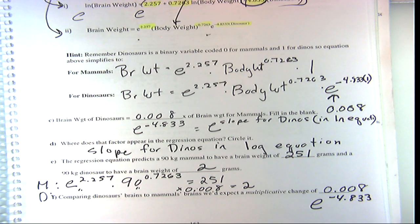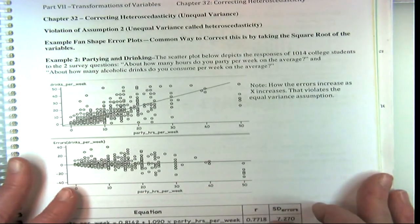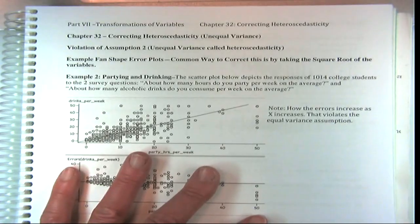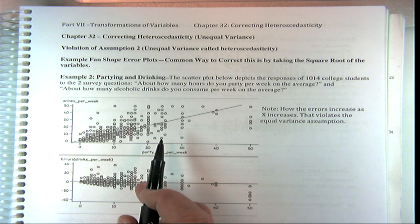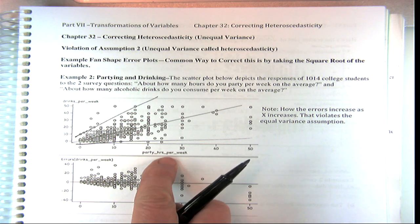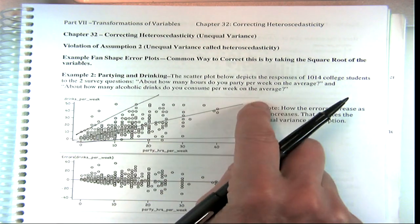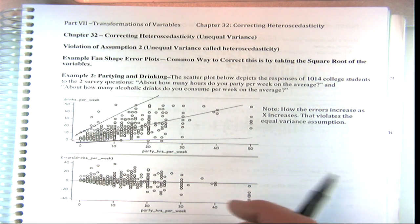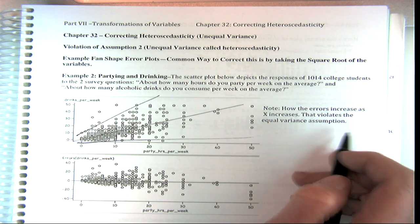I just want to get you familiar with this — it makes logistic regression so much easier when we get there. Now one last thing: let's look at log transformations. Often you see fan-shaped data like this — from our own data, plotting reported party hours per week versus reported drinks per week. We have a very strong correlation but we get this fan shape. The errors increase as x increases, which violates the equal variance assumption.